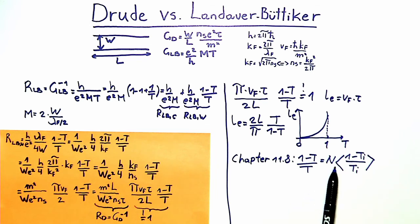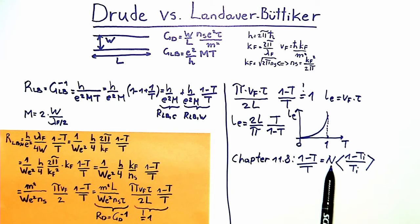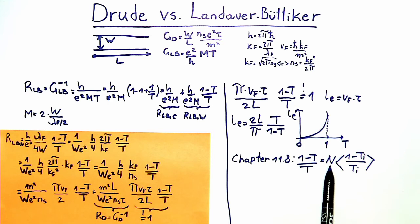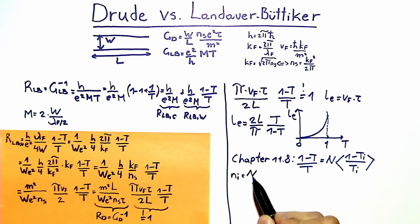Here t_i is the transmission of an individual scatterer, not the transmission of the whole wire, and the brackets denote an average. This expression tells us that the overall transmission t depends inversely on the number of scatterers — the larger the number of scatterers, the lower the transmission. Inserting this into the expression for L_e, we can express the mean free path in terms of the number of scatterers, and introduce a scatterer density N_i = n/L.